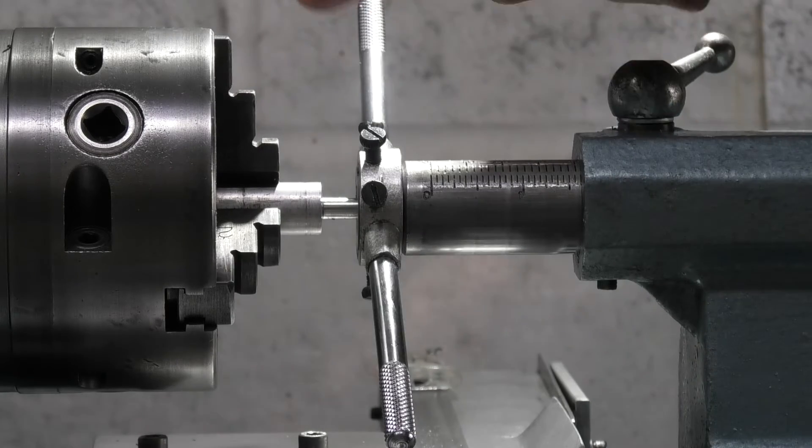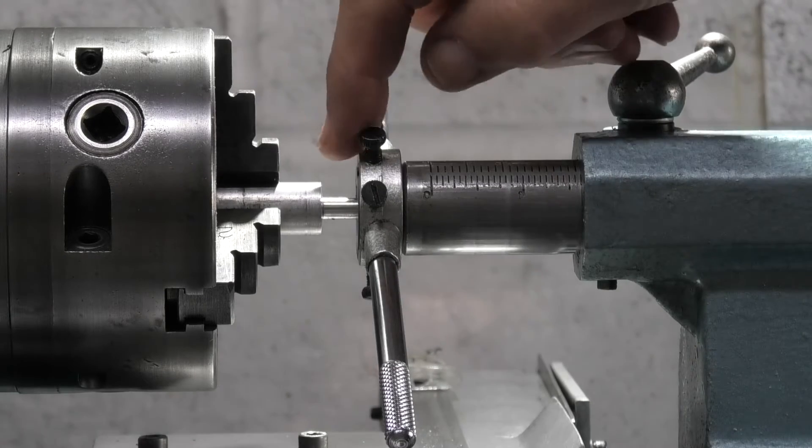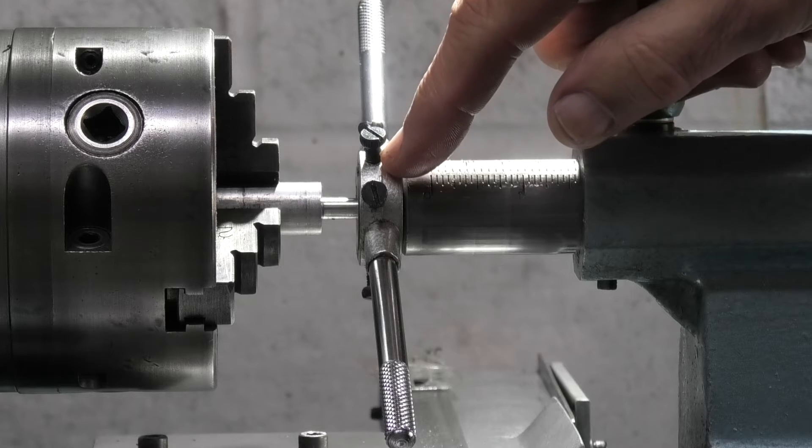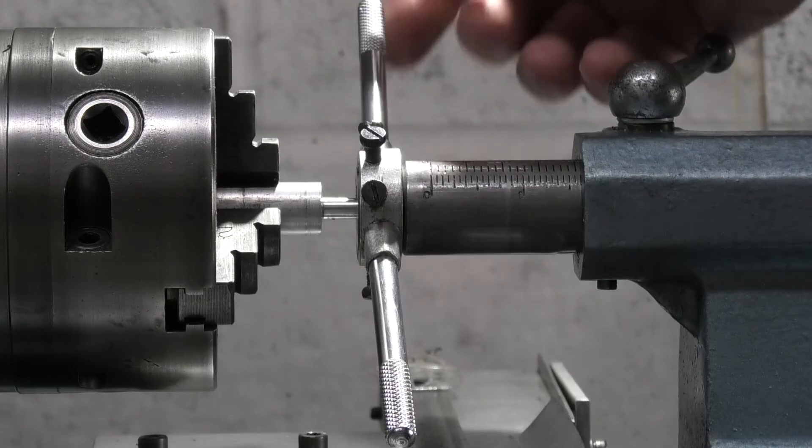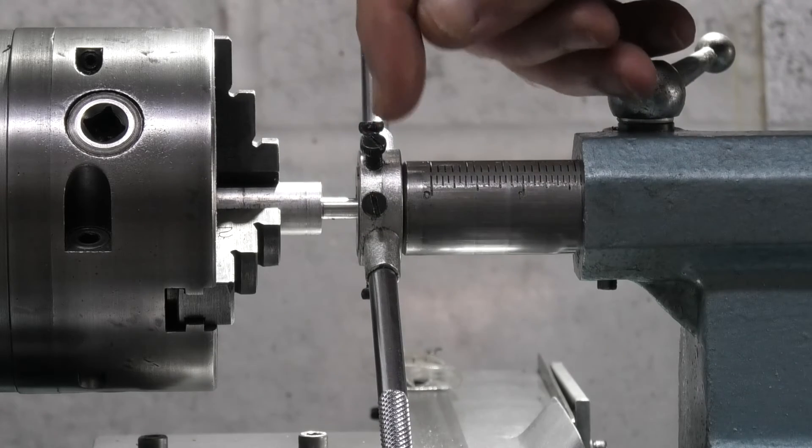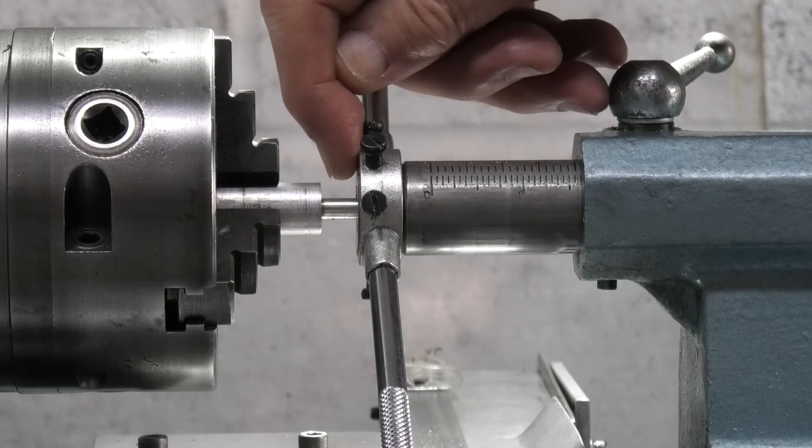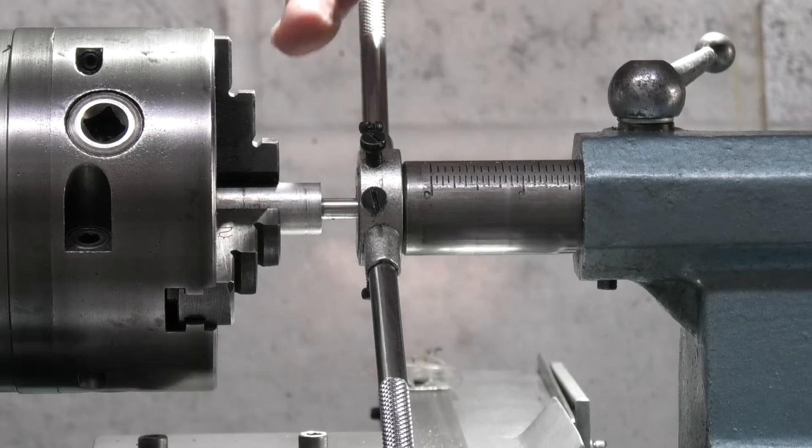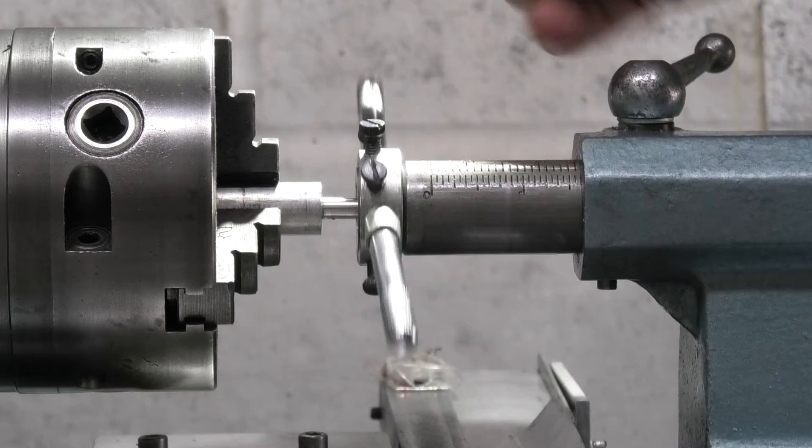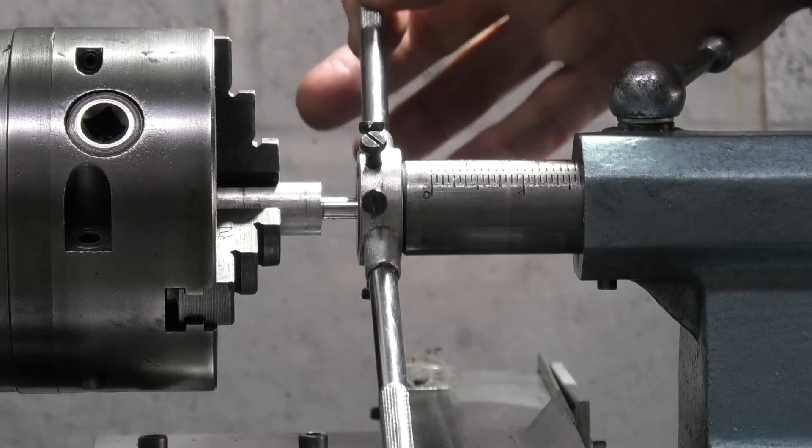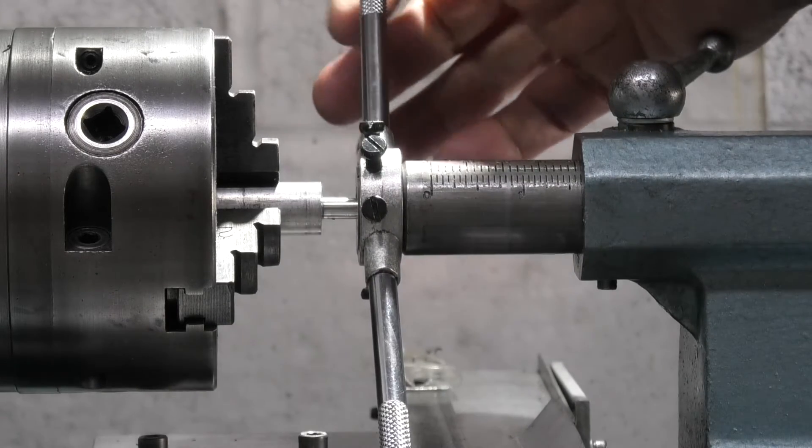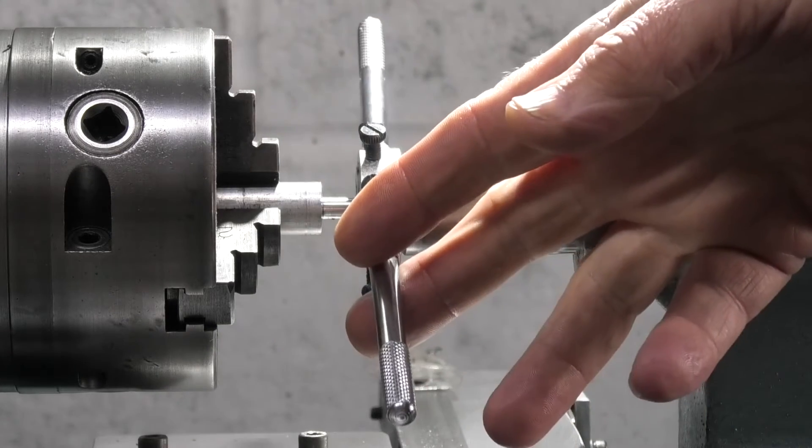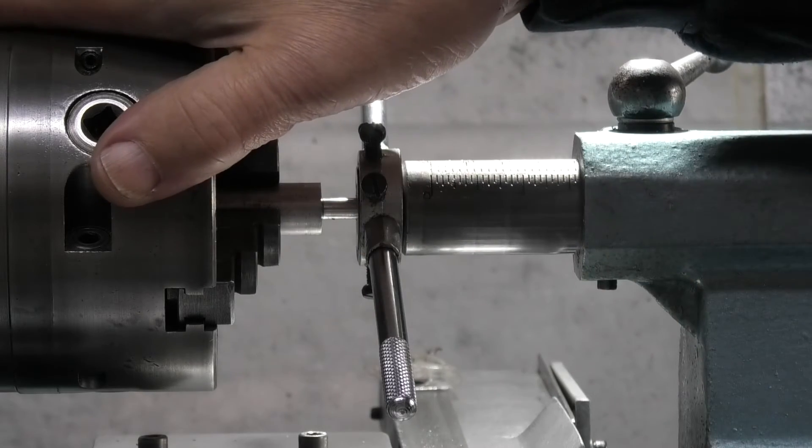Now if you wanted to use the lathe to cut the thread using the die, you could turn the motor on slow and this would feed along. But the problem is when you get to the end the die will lock up on the end where the diameter changes and this will spin, and what normally happens is you probably damage one of the handles on your die stock before you could stop the lathe.